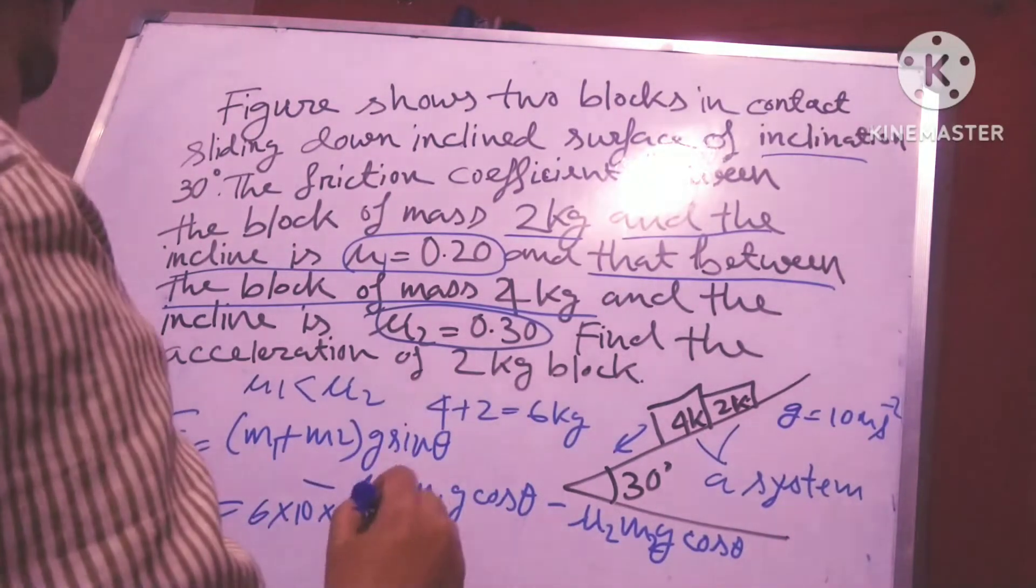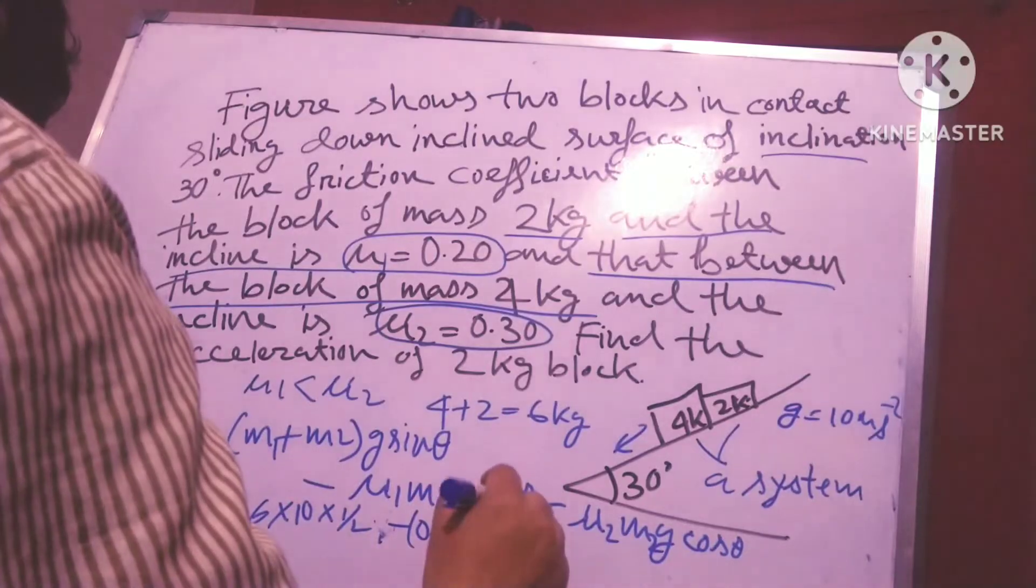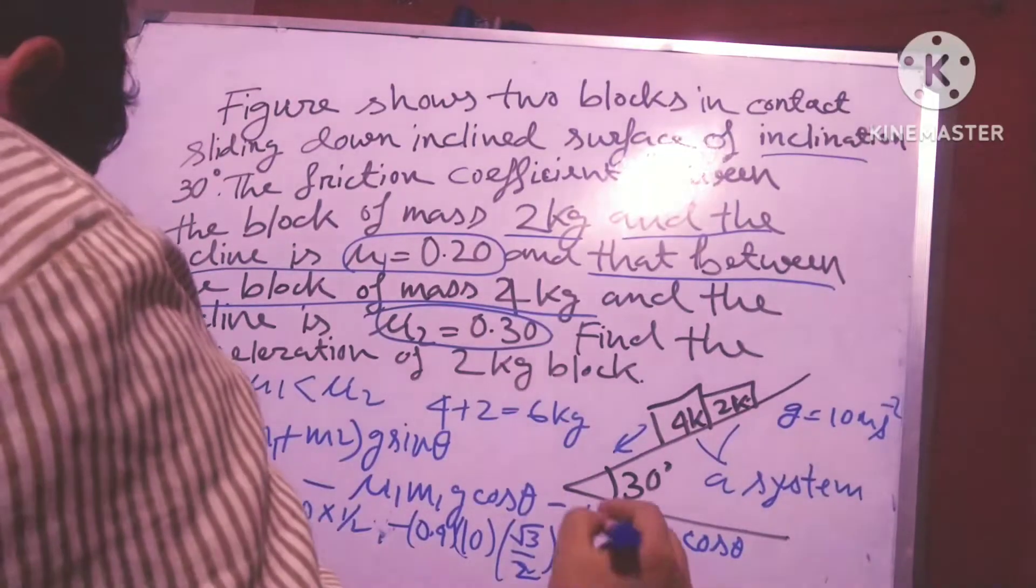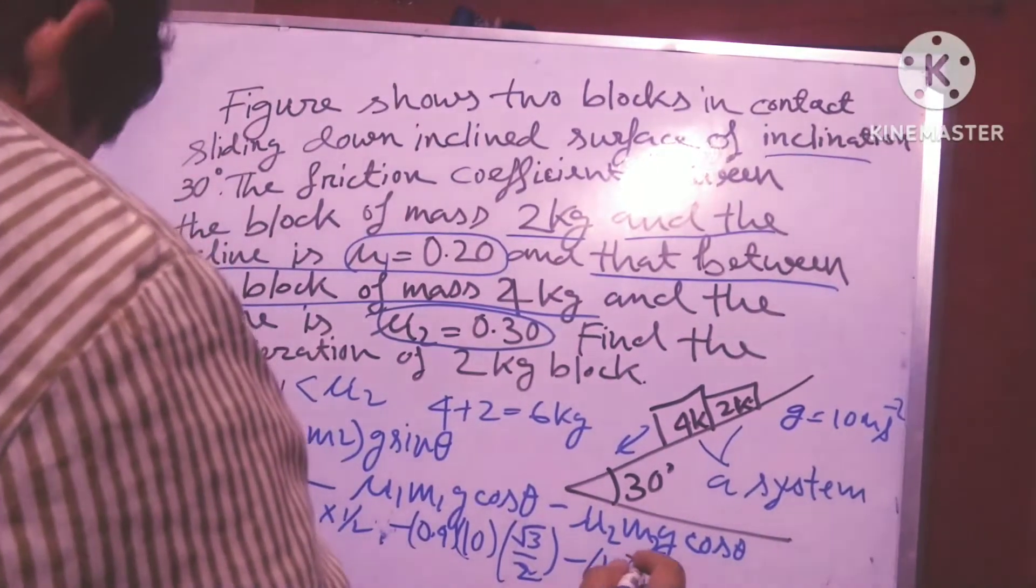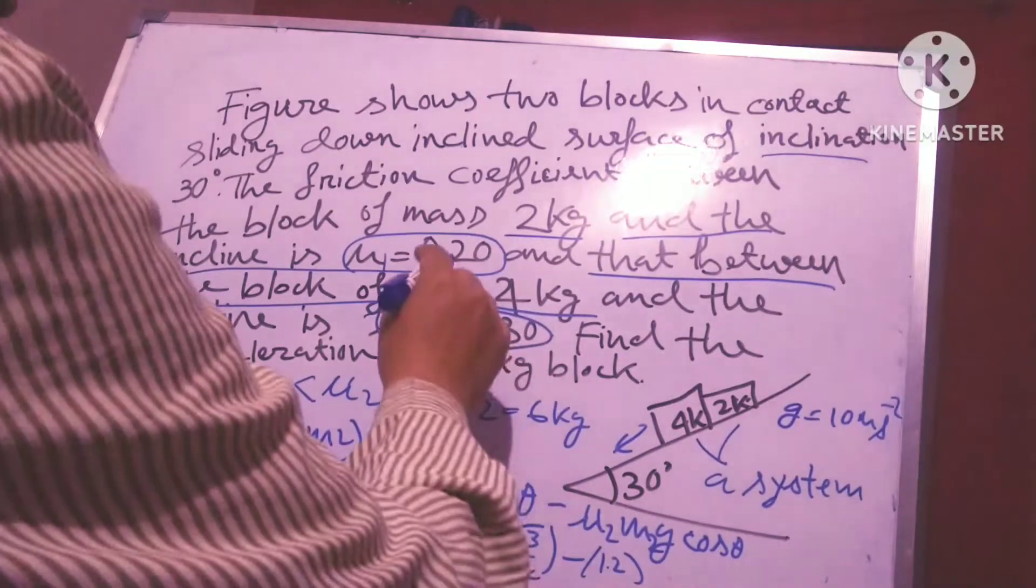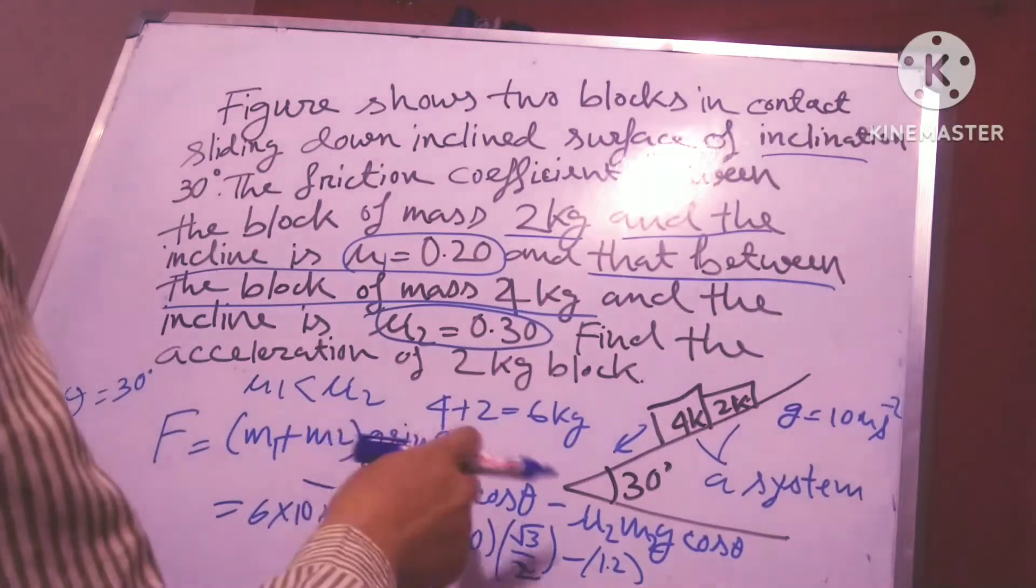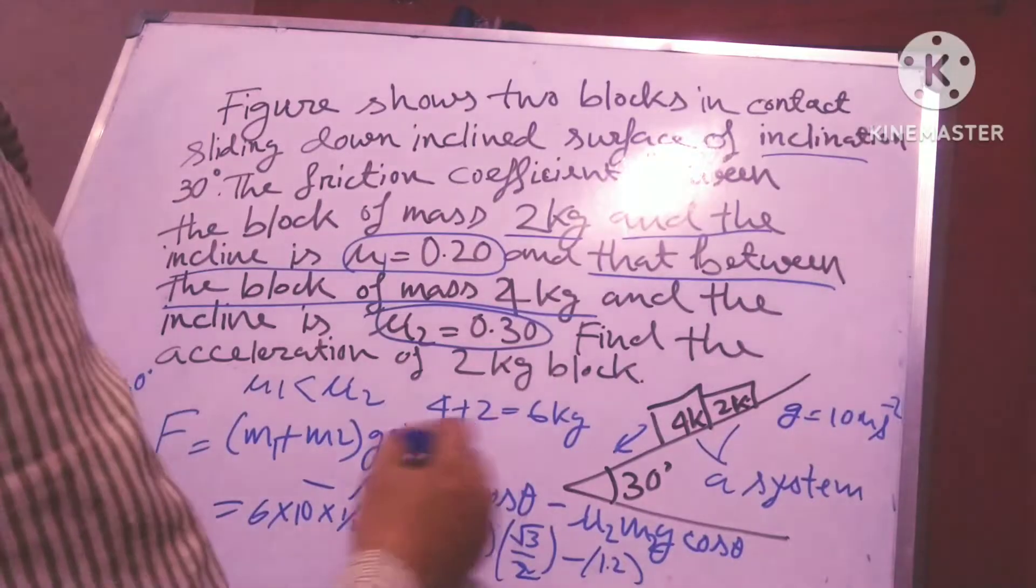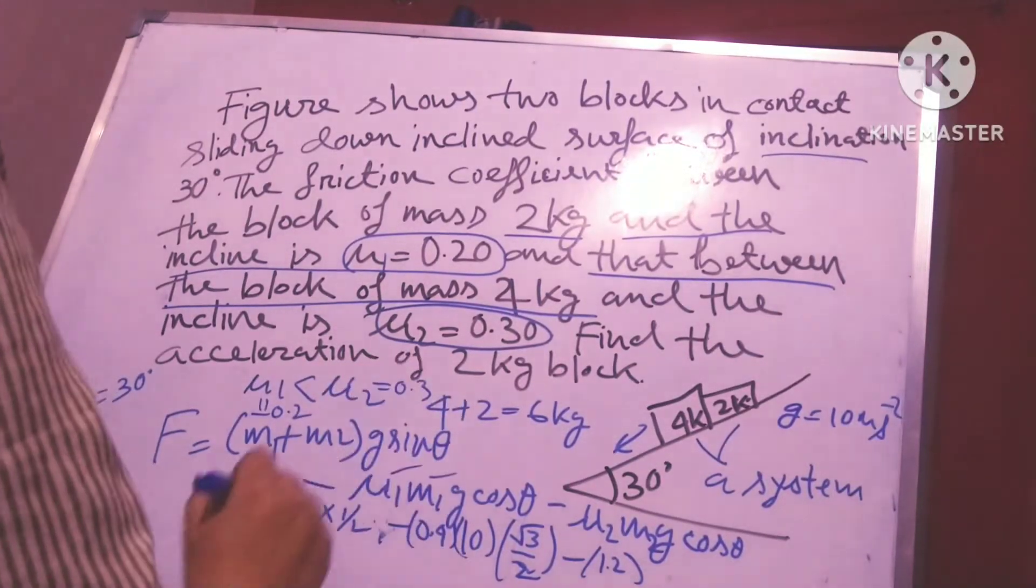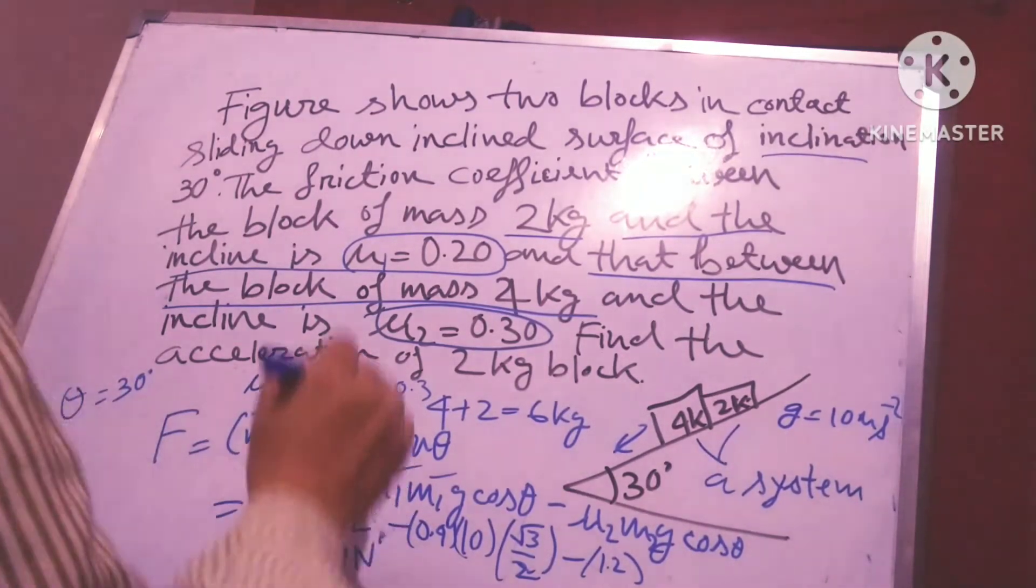Just putting the values: 0.2 × 2 × 10 × (√3/2) minus 0.3 × 4 × 10 × (√3/2). Here μ₁ equals 0.2 and μ₂ equals 0.3, so we get the value 16.24 Newtons.